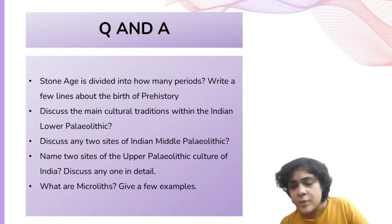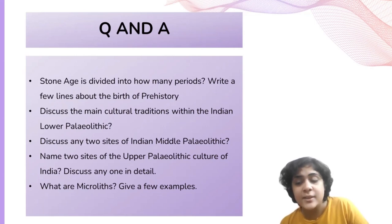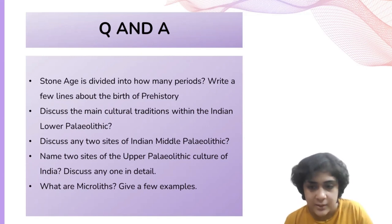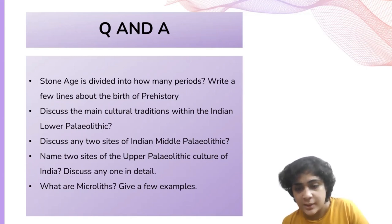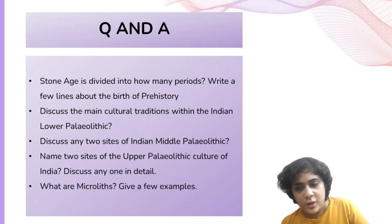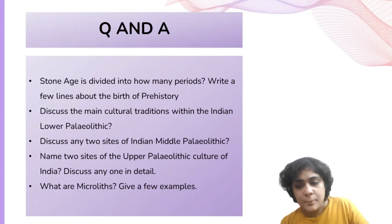This discovery revealed human occupation long before the current landscape existed. John Lubbock's Prehistoric Times formalized prehistory, categorizing it into Paleolithic, Neolithic, and eventually other periods. The second question asks to discuss the main cultural traditions within the Indian Lower Paleolithic. These traditions are the Sohanian and the Acheulian. The Sohanian tradition, forming part of the East and Southeast Asian chopper-chopping tool tradition, and the hand axe-cleaver or biface assemblages constituting the Acheulian tradition.